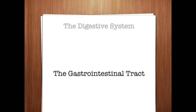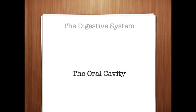When these terms are used to describe diagnostic procedures, the small intestine is usually included with the upper GI tract. The major structures of the oral cavity, also known as the mouth, are the lips, hard and soft palates, salivary glands, tongue, teeth, and the periodontum.